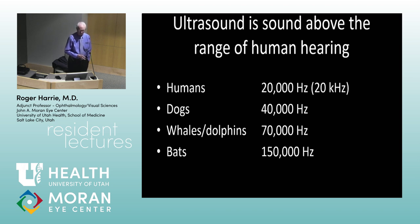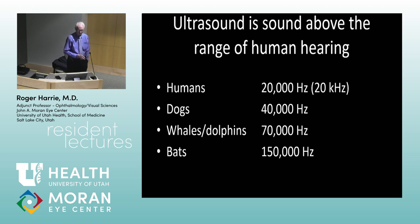Humans' range of hearing is up to about 20 kilohertz, and ultrasound is defined as sound above that range — that's the board-question definition. Dogs can hear up to about 40 kilohertz, dolphins 70, and bats up to 150. So these animals have the ability beyond our hearing range to hear and localize things.